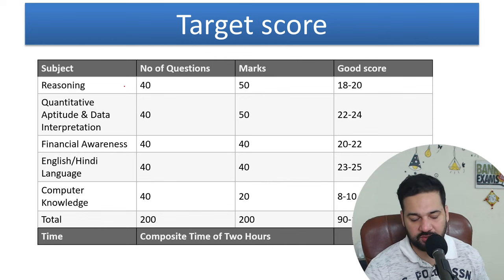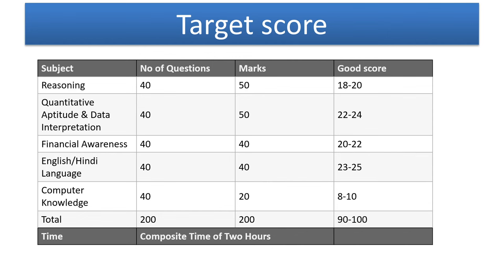Target scores. These are the target scores for IBPS, RRB, Scale 2, 2024 exam. This is the target score. In the Reasoning Ability section, out of 50, 20 is a good score. 20 marks is a good score.